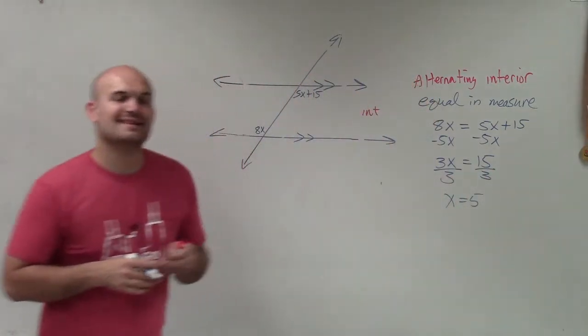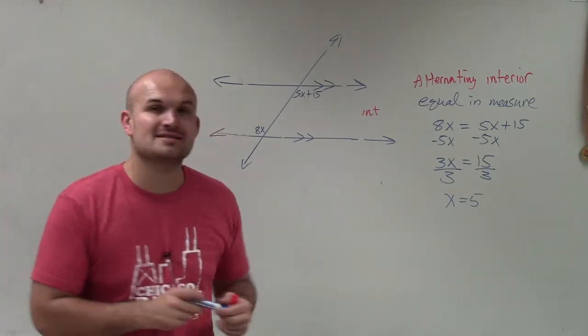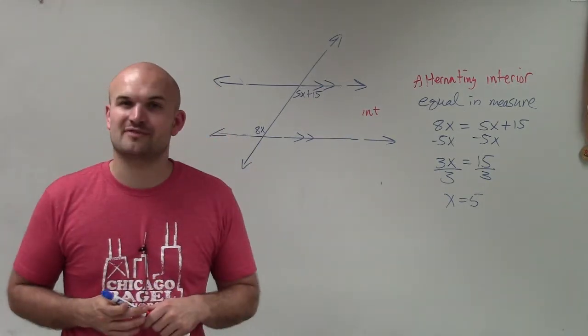So there we go, ladies and gentlemen. That is how you use alternate interior angles and parallel lines to help solve for your missing variable. Thanks.